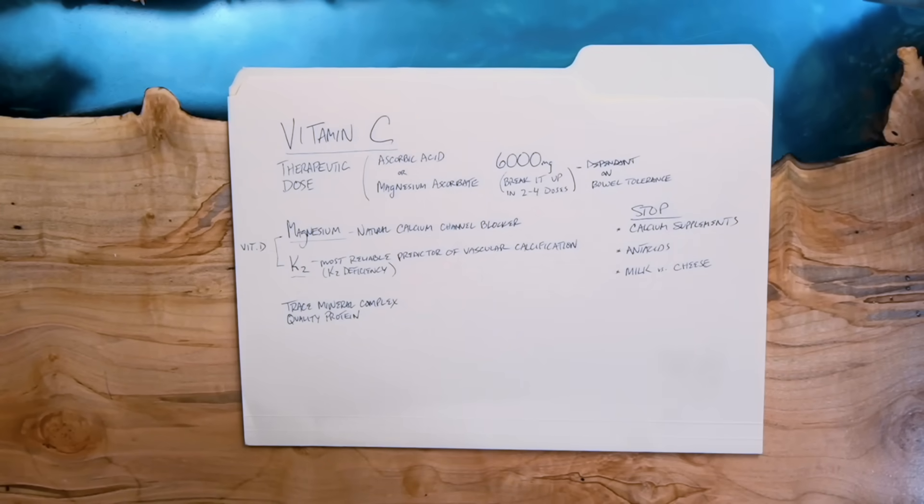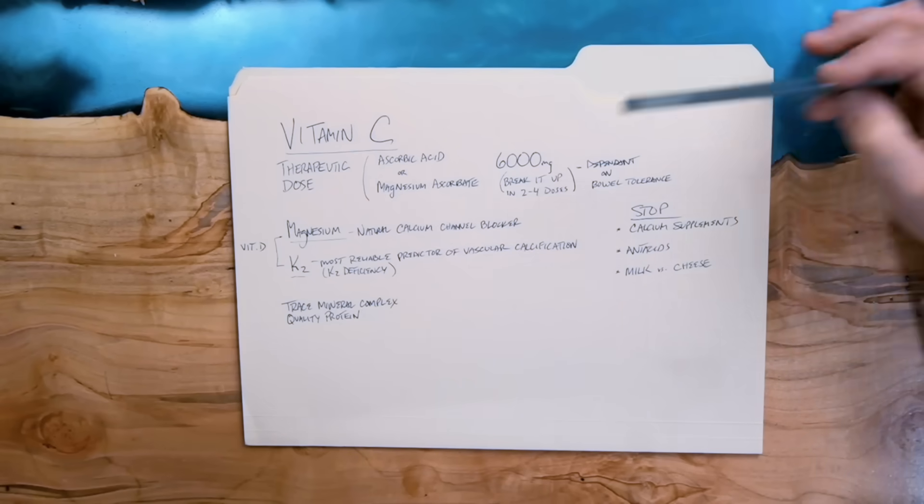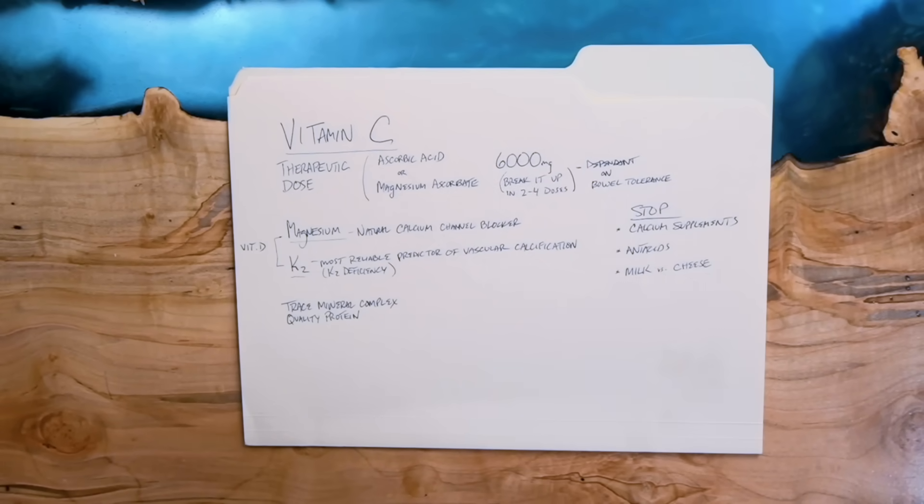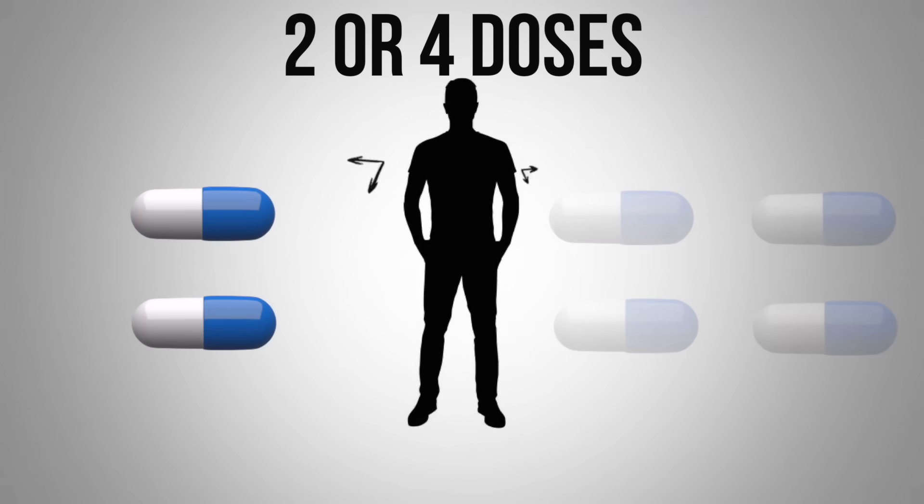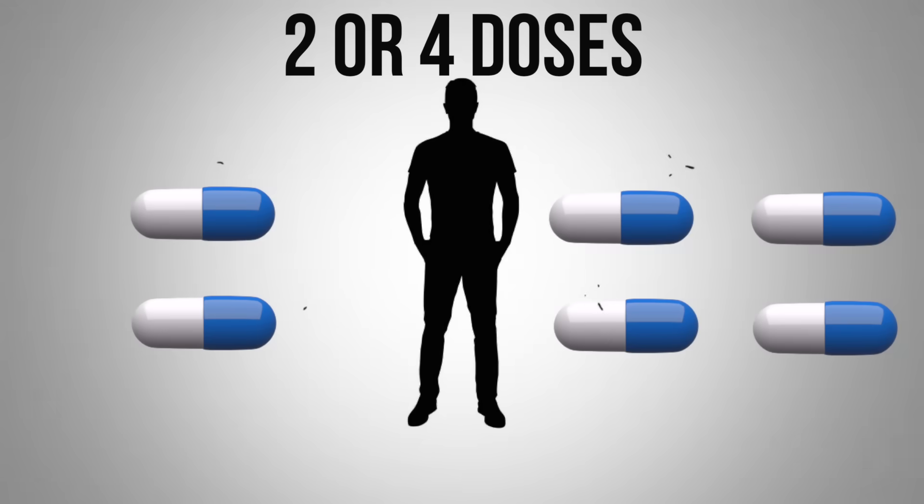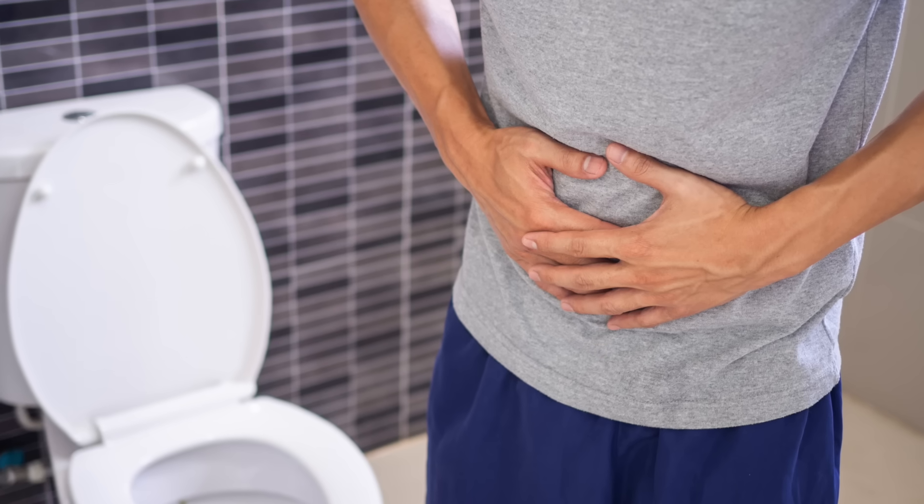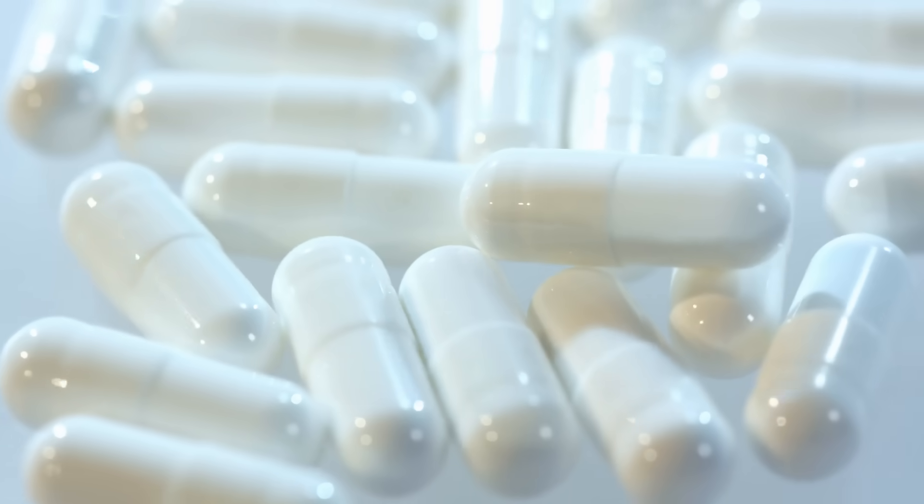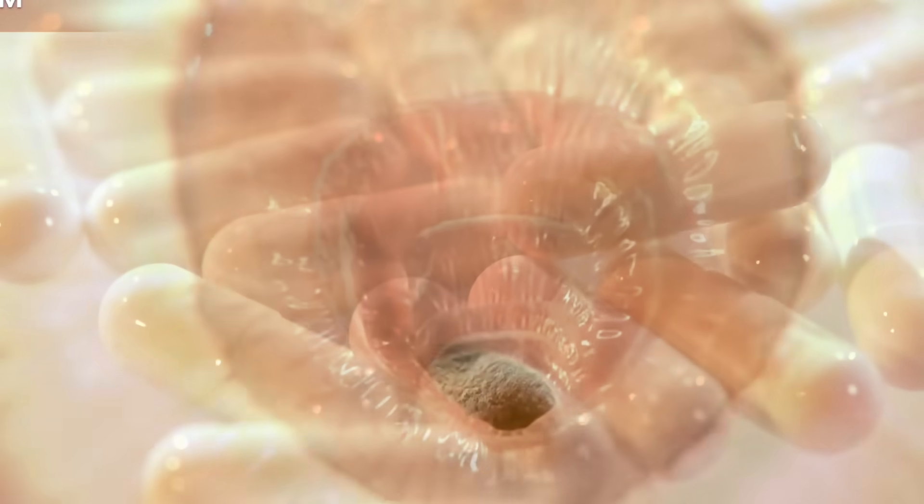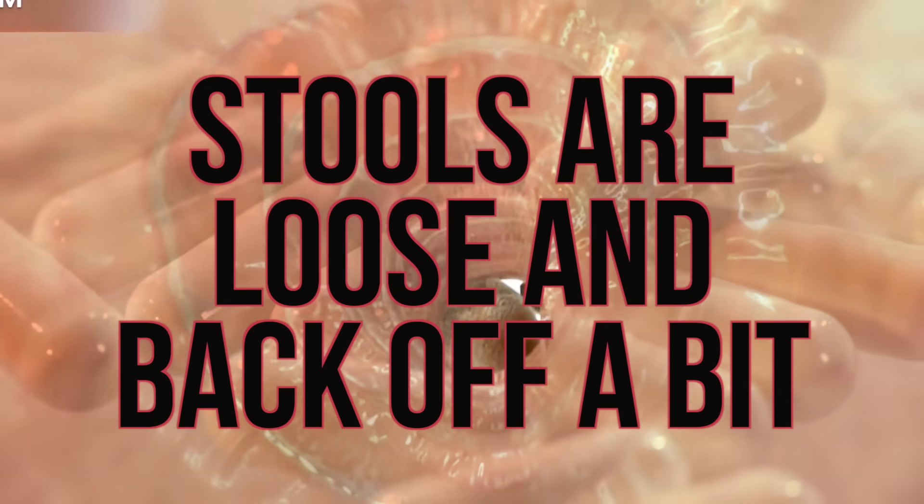Now, there's a lot of research on this, not just for osteoporosis, for other things, but 6,000 plus. So some people need to go a lot higher. Now, I would recommend breaking it up into two or four doses. And one way to determine if you're taking too much is if you have diarrhea, because that's one of the side effects. So you want to take a certain amount until maybe your stools are loose and then back off a little bit.